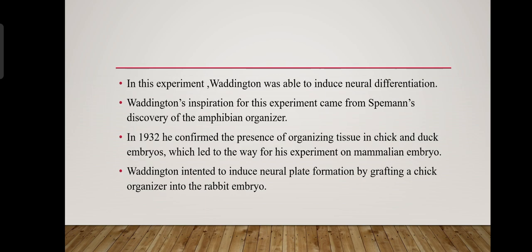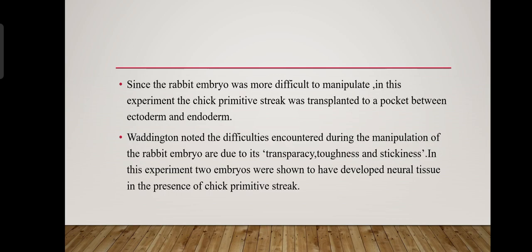Waddington intended to induce neural plate formation by grafting a chick organizer into the rabbit embryo, since the rabbit embryo was more difficult to manipulate. The chick primitive streak was transplanted to a pocket between the ectoderm and endoderm. Waddington noted the difficulties encountered during manipulation of the rabbit embryo were due to its transparency, toughness, and stickiness. Two embryos were shown to have developed neural tissue in the presence of the chick primitive streak.